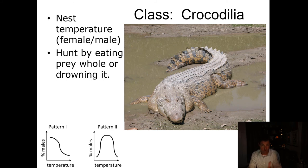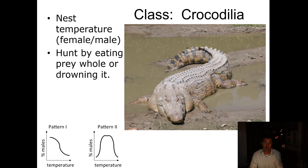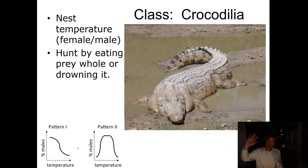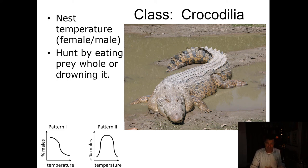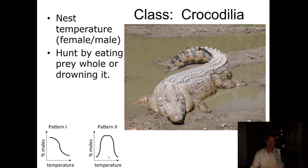Saltwater crocodiles hunt by eating prey whole, or with really big prey they drown it. One of the unique hunting strategies of large crocodiles is they grab something and drag it into the water. Because they're so big and heavy, they can grab something like a deer — or occasionally even a person — and just back up into the water. Because they're reptiles, they can hold their breath for a long time and simply drown the prey. It's like being grabbed by a car that backs up into the water. They're found in estuaries but do go out into the open ocean as well.